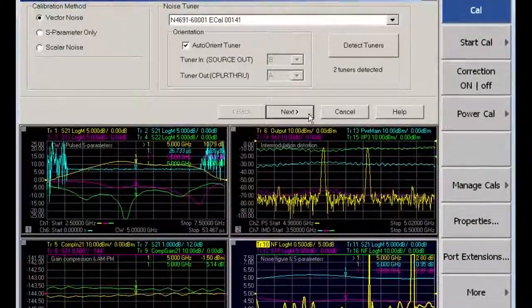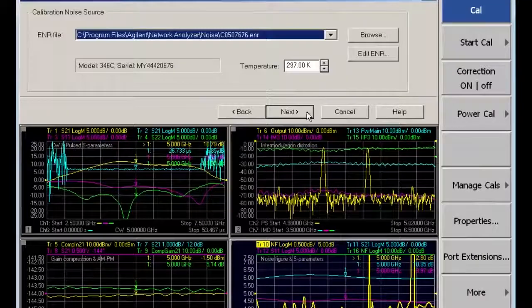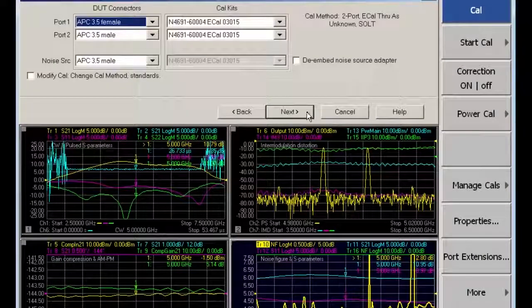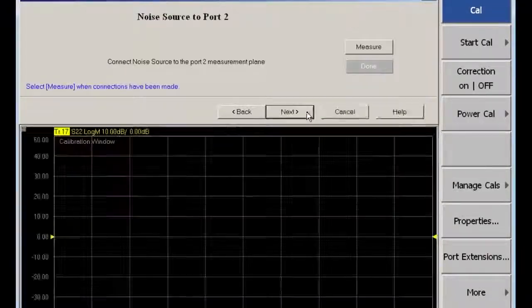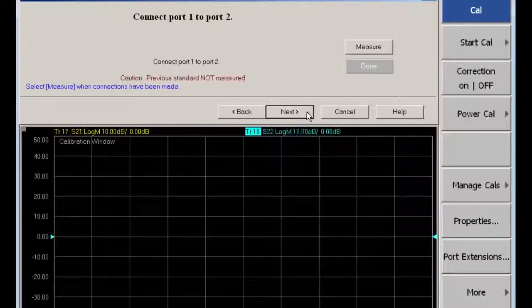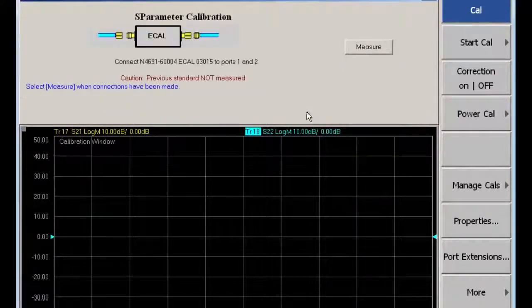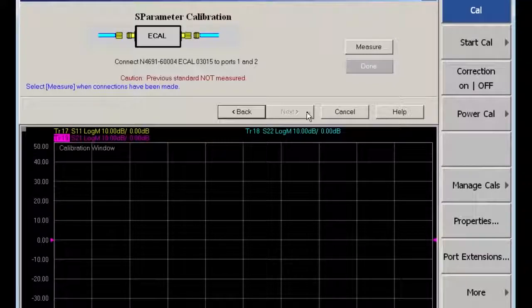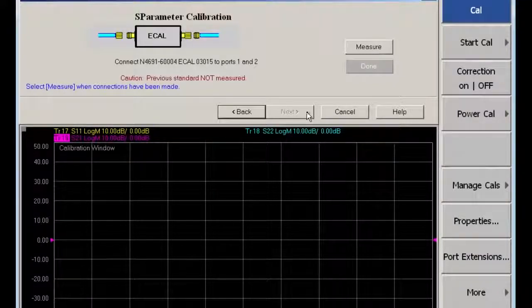Calibration is simple with a calibration wizard that guides the user through all of the required calibration steps. A mechanical calibration kit or an electronic ECAL module is required to calibrate the S-parameter receivers, and a noise source or power meter is required to calibrate the noise receiver.